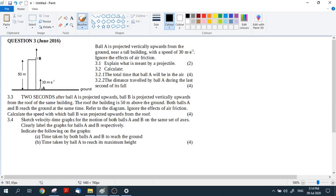We're going to have a look at what this ball is up to. Ball A is projected vertically upwards from the ground, so here's ball A, projected vertically upwards from the ground near a tall building with a speed of 30 meters per second. Ignore the effects of air friction.